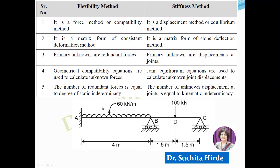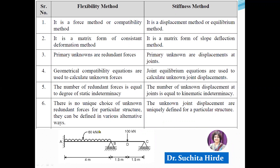Regarding degree of indeterminacy: since flexibility method is a force method, the static degree of indeterminacy is important, whereas in stiffness method we calculate the kinematic degree of indeterminacy. In flexibility method there is no unique choice of unknown redundant forces for a particular structure, but in stiffness method the unknown joint displacements are uniquely defined. Therefore flexibility method is not suitable for developing computer programs, whereas stiffness matrix method is the most popular for computer programming.